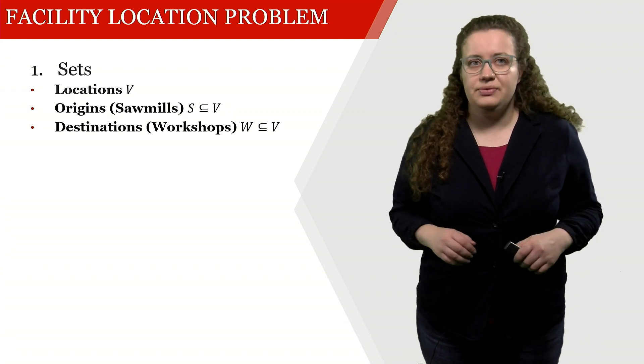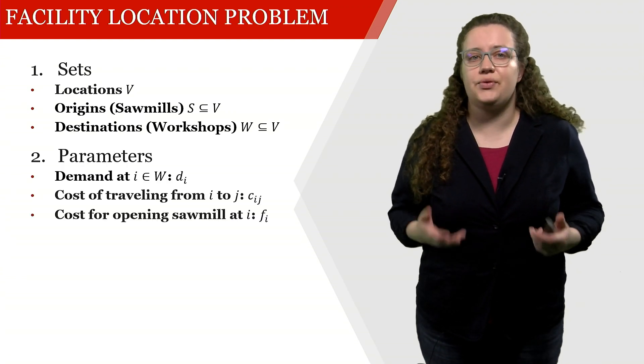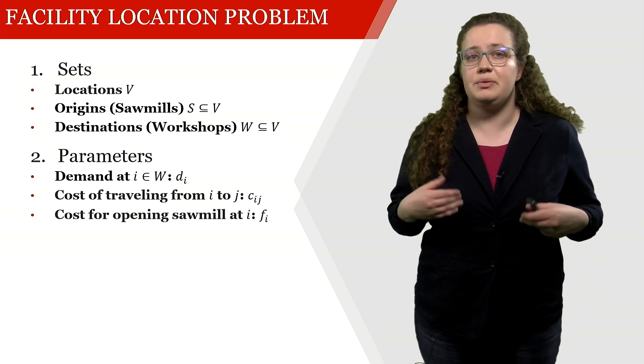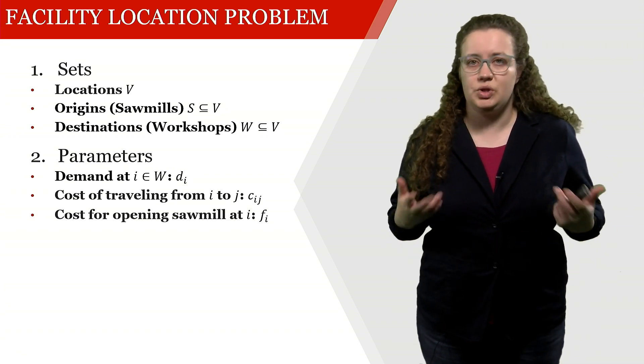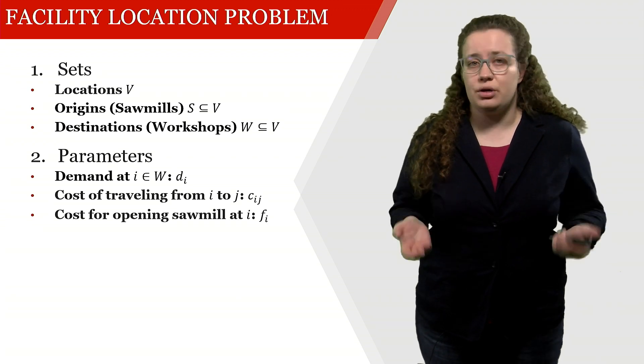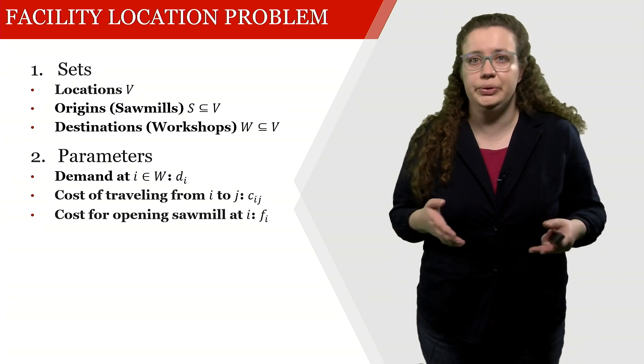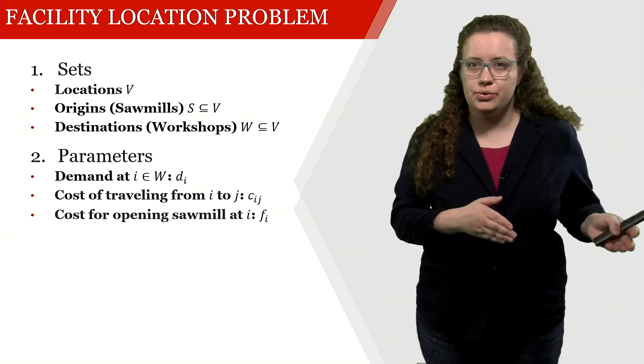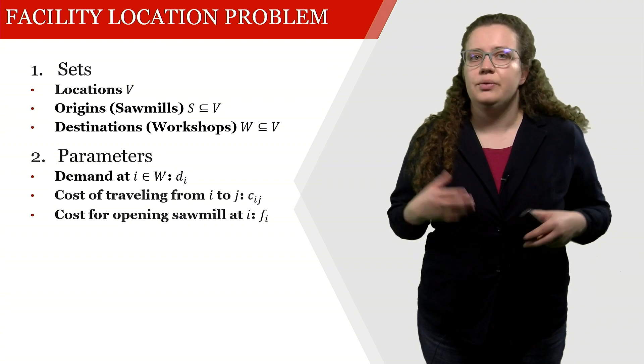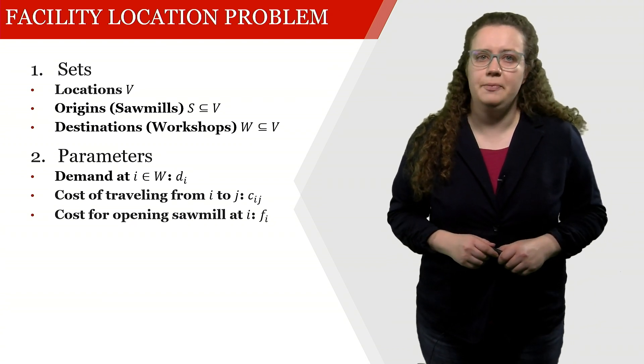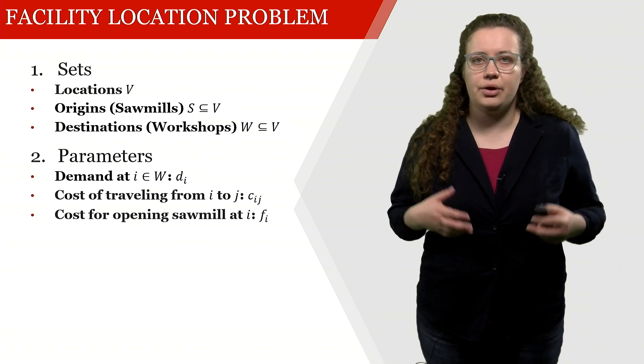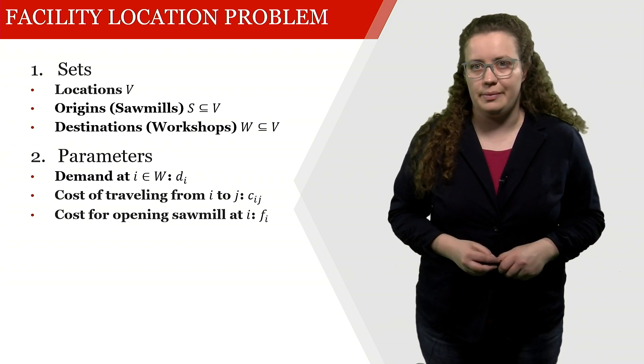The second step in the recipe for formulations is parameters. In our case the parameters are rather simple. We have a demand at the workshops which we need to satisfy. We have a cost for traveling, so for every truck load of wood that we're transporting from a sawmill i to a workshop j we're incurring a cost of cij. And then of course we also have costs for opening a sawmill.